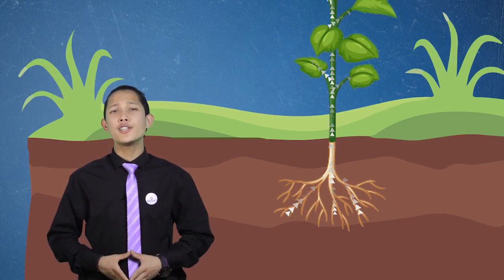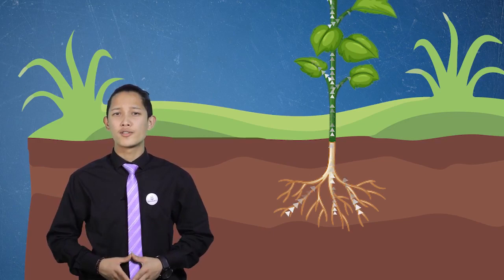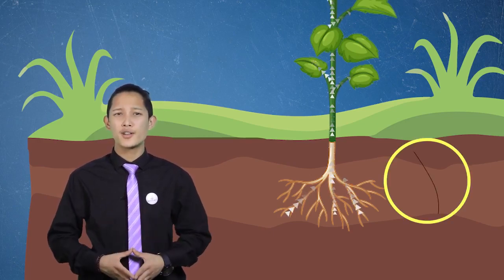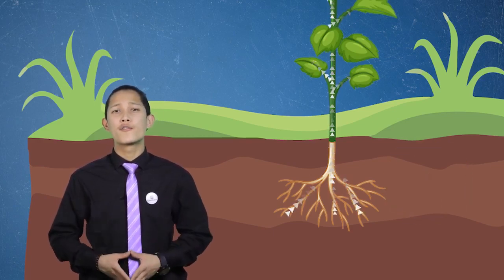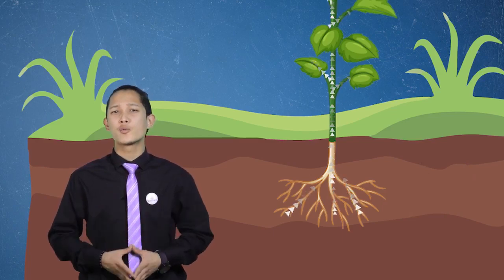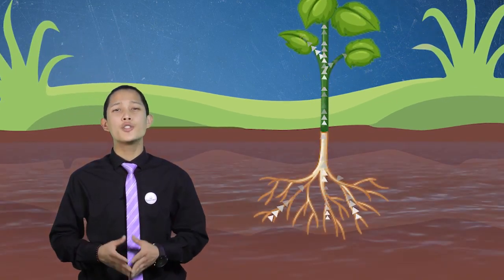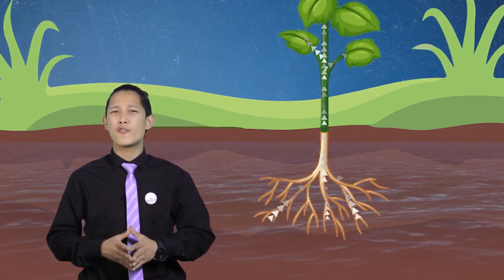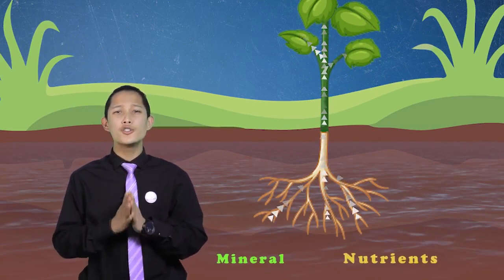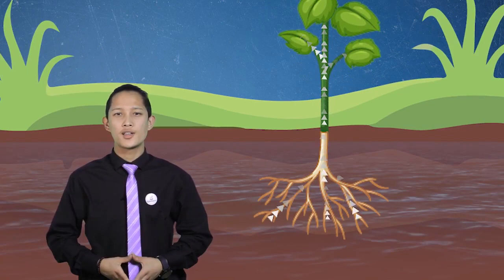Root hairs are actually very small roots, finer than human hair, which absorb nutrients from their very close contact with soil particles. Soil particles are covered within a thin film of water in which mineral nutrients are dissolved. That's why roots are very important part of the plant.